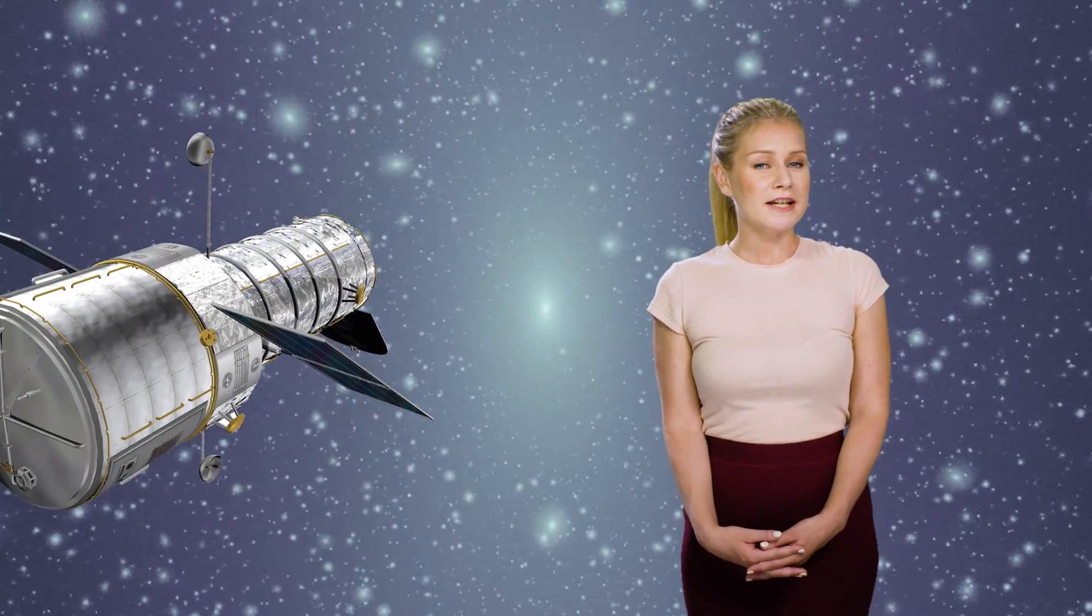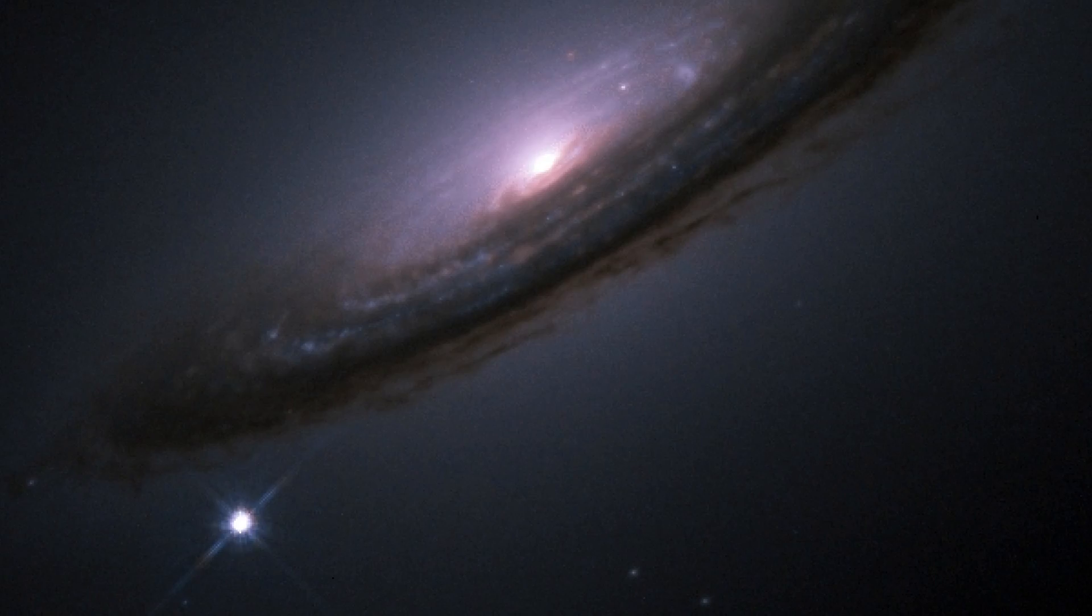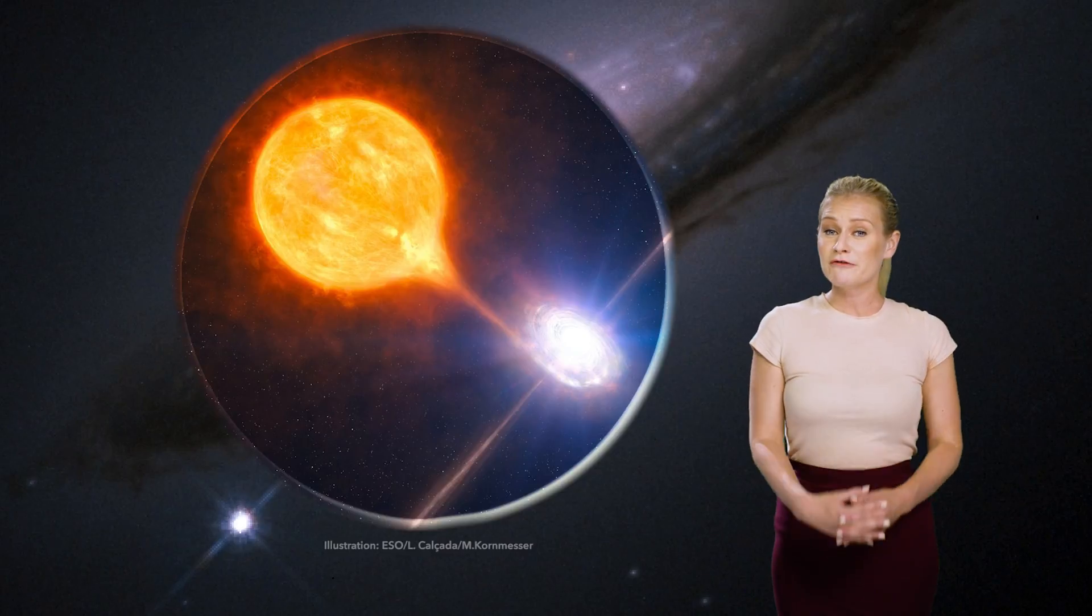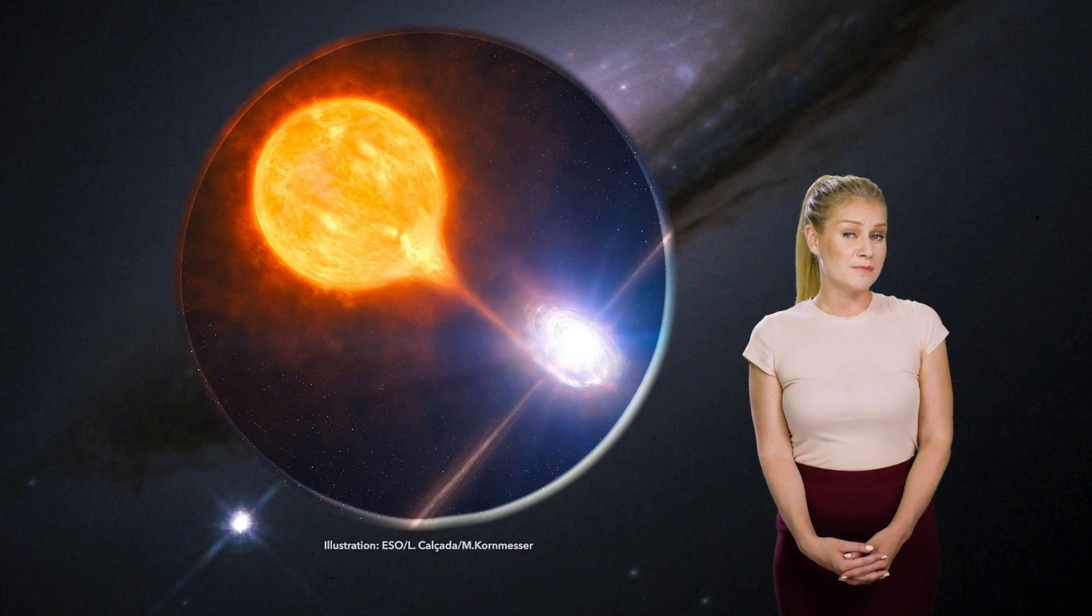This model of the universe has been tested through many different experiments. The most famous is by looking at exploding stars far away in the universe. There are certain type of stellar explosions called type 1a supernovae, and when these explode, they have the same mass and therefore the same brightness, which makes them very useful because you can determine their distance.